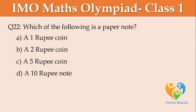Which of the following is a paper note? A: a 1 rupees coin, B: a 2 rupees coin, C: a 5 rupees coin, D: a 10 rupees note.